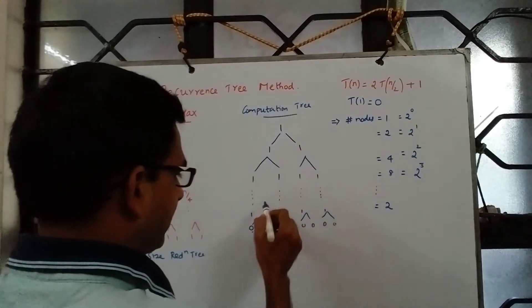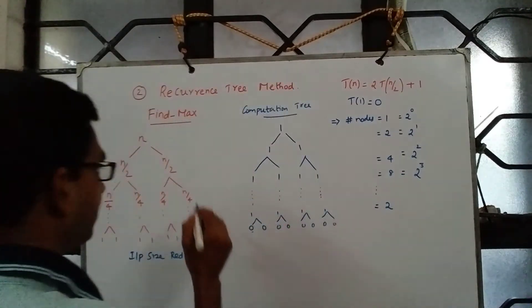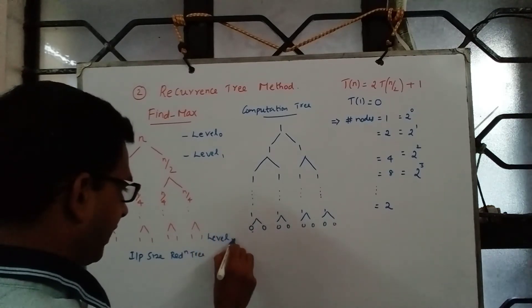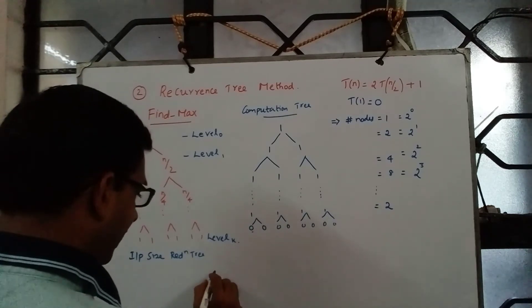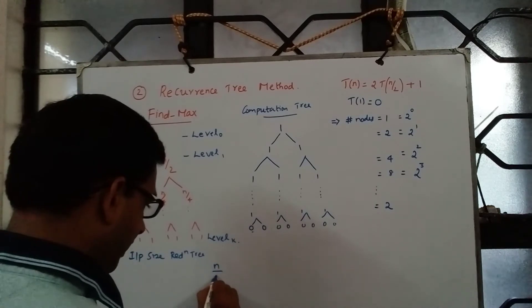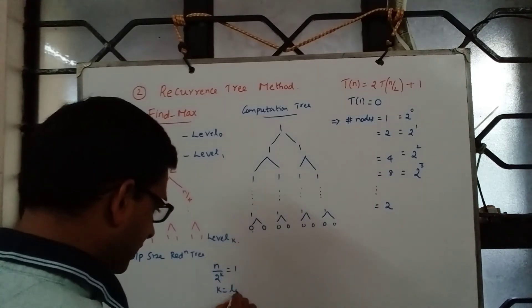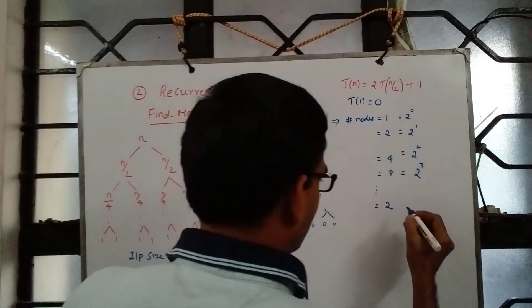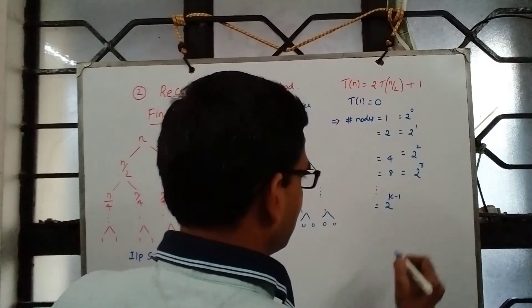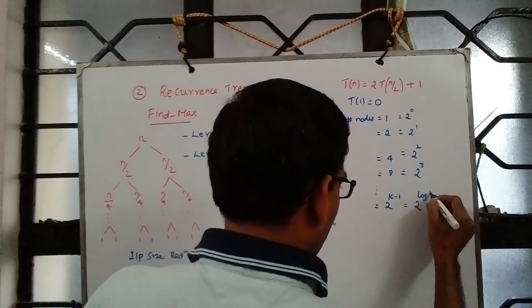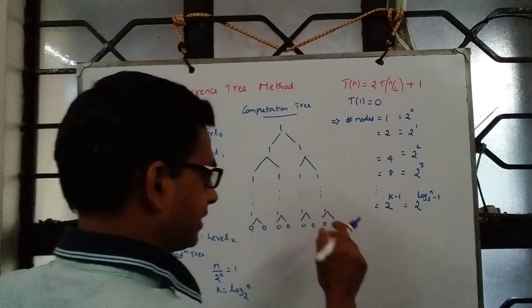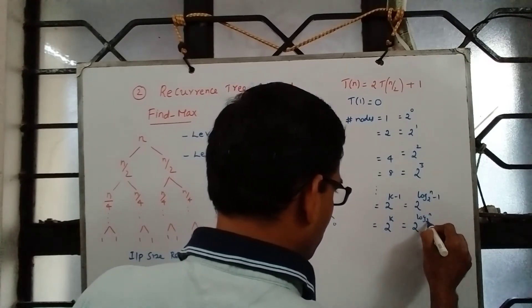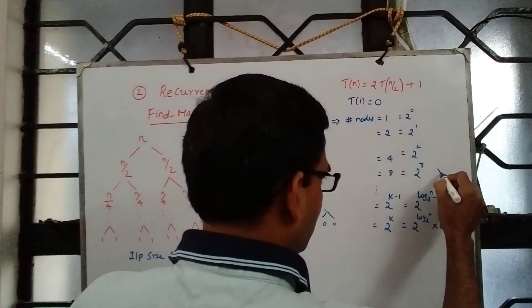This is level 0, then level 1, and so on until level k. n divided by 2^k becomes 1, so k = log₂(n). At the last-but-one level, which is 2^(k−1) = 2^(log₂n − 1), we incur one comparison at each node. At the last level there are 2^k = n nodes but the cost there is 0; the cost at all other levels is precisely 1.